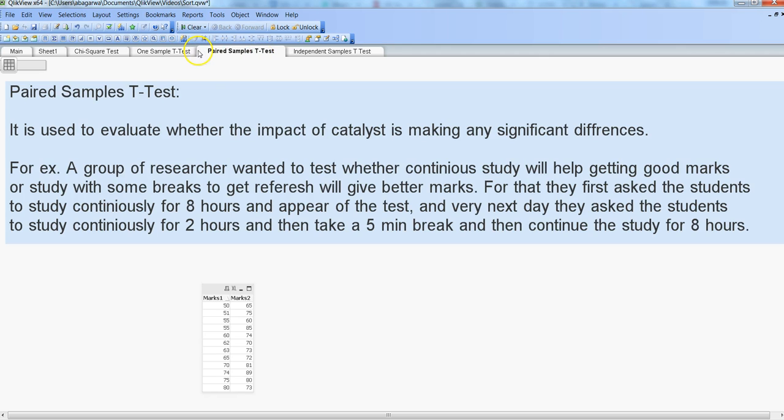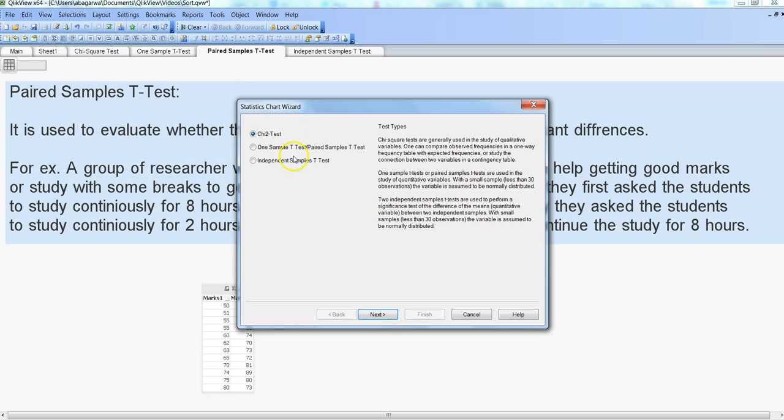Previously I have shown you the chi-square test and one sample t-test which you can do from the tools, statistics, chart wizard. Now we are talking about the paired sample t-test, which is an option within the one sample t-test.